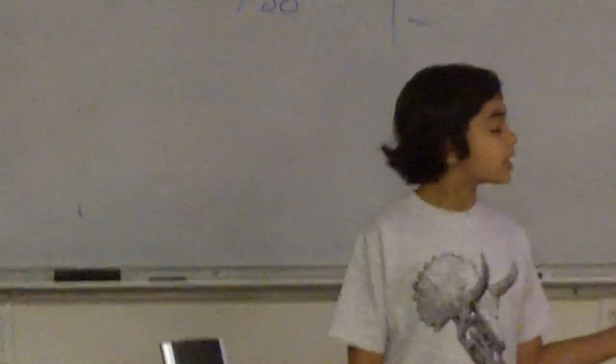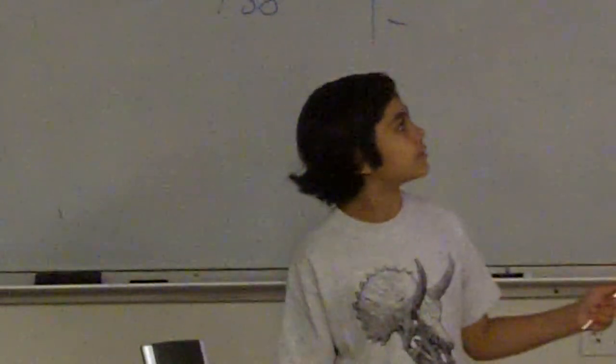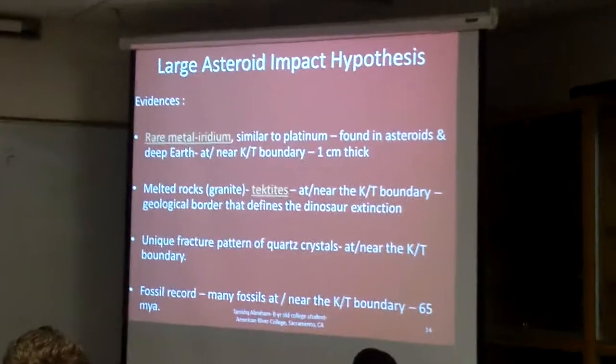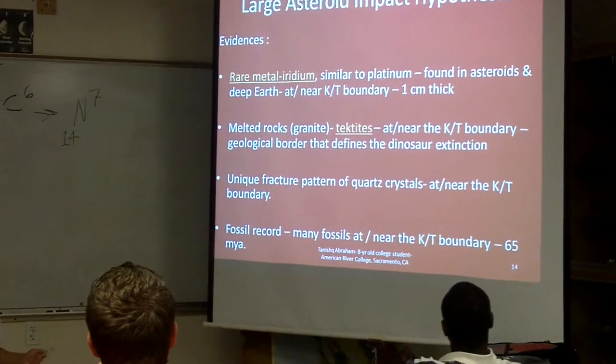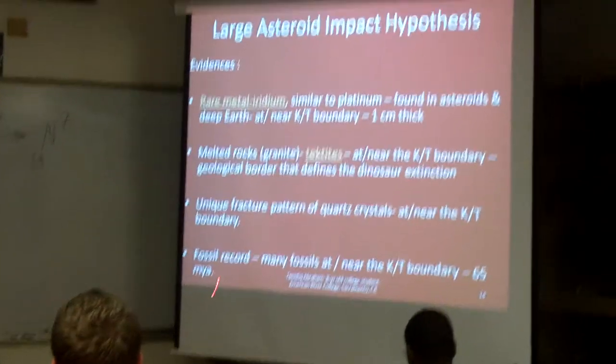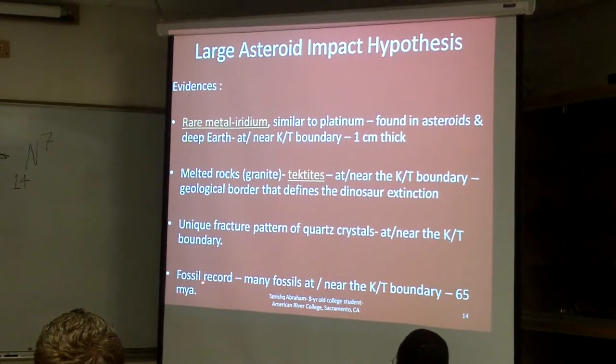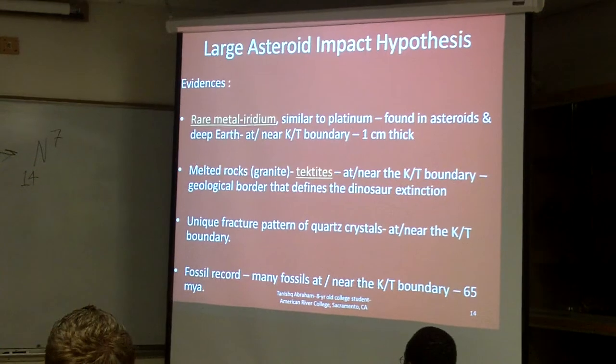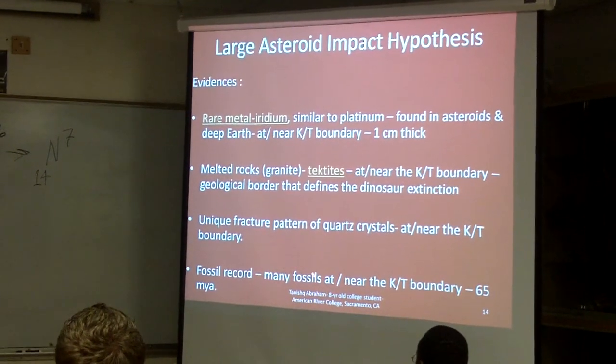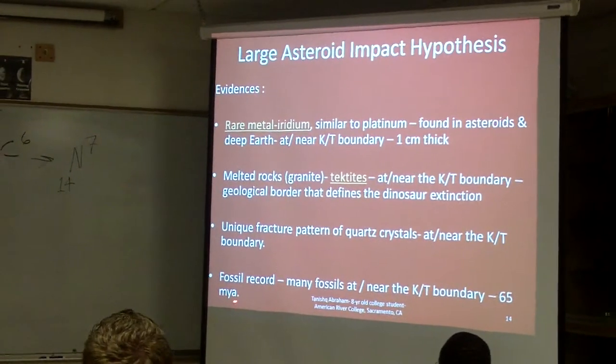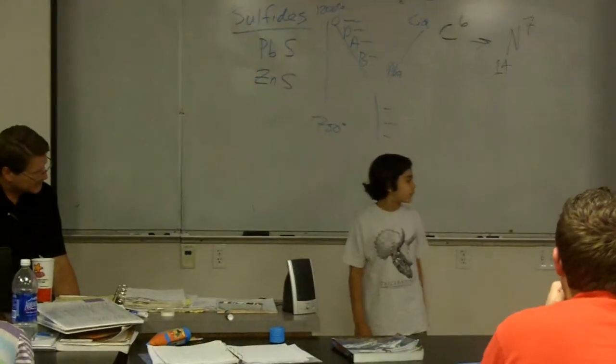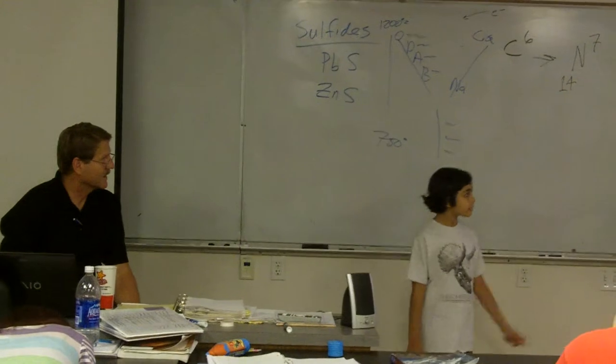Another evidence is the tektites. That's also near the KT boundary. Another evidence is the quartz crystals, and they're also near the KT boundary. These fossils and the rocks, the last evidence I'm going to say is the fossils of course, and they're near the KT boundary, and they were actually dated to be about 65 million years ago.